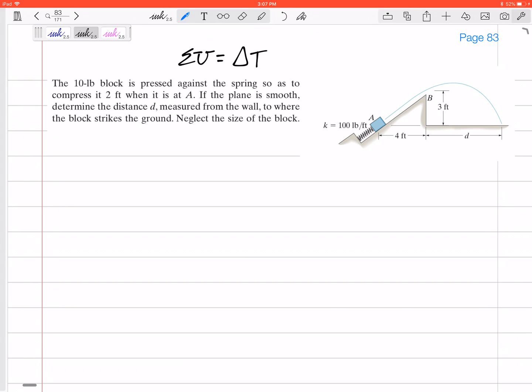Alright, so we've got a 10 pound block. It's pressed against this spring so that the spring is compressed two feet when it is at A. So it doesn't say the spring's length, it just says the spring is compressed two feet. That is going to be our X when it's at A. If the plane is smooth, determine the distance d measured from the wall to where the block strikes the ground. Neglect the size of the block.